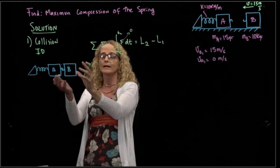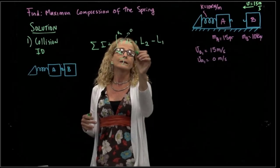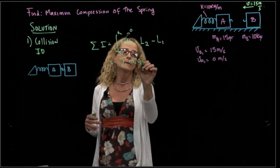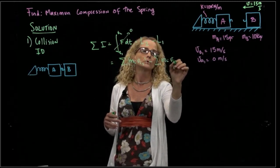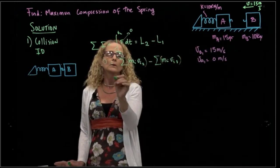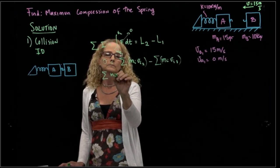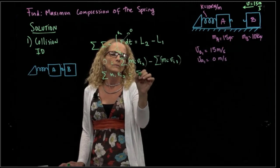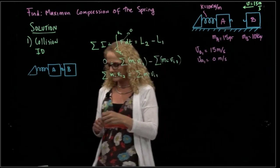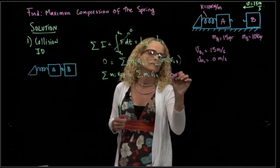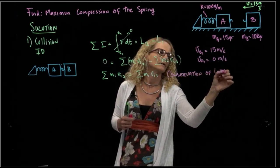So in this case, this will be zero, because I don't have any impact. The impact forces are internal. So I will have all the linear momentum of all the particles, or blocks in this case, in position two, minus all the linear momentum of position one. Since this is equal to zero, we can say that there is conservation of linear momentum.